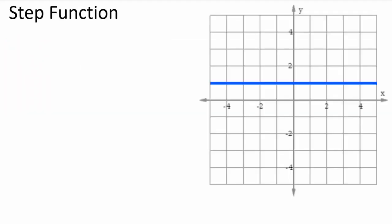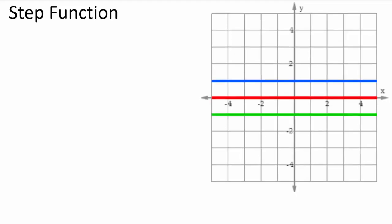So a step function: let's take the function y equals 1, add to it y equals 0, and then y equals negative 1. We have these three functions — y equals 1 is the blue graph on top, the red graph is on the x-axis, and the green is a horizontal line at negative 1. So we have three horizontal lines, three different functions, and we can take any piece of each one.